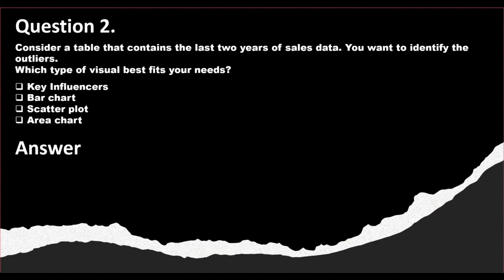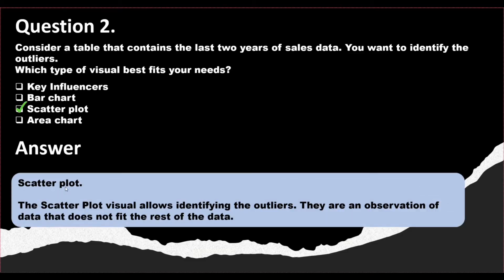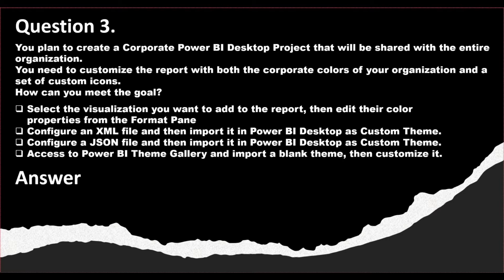Question number two: you have a table that contains the last two years of sales data. You want to identify the outliers. Which type of visual best fits your needs? Whenever you see a question about identifying outliers, the correct answer is always the scatter plot, because the scatter plot visual always identifies outliers — they are observations of the data that do not fit the rest of the data.